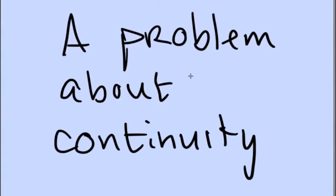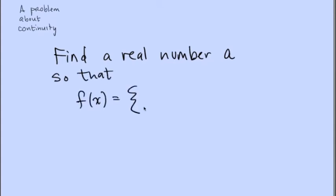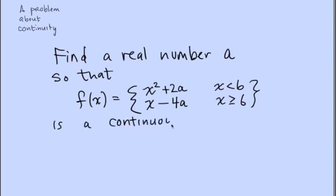This is a problem about continuity, similar to a problem on your homework assignment. Find a real number a so that the function f(x), which is piecewise defined as x squared plus 2a for x less than 6, and x minus 4a when x is greater than or equal to 6, is a continuous function.